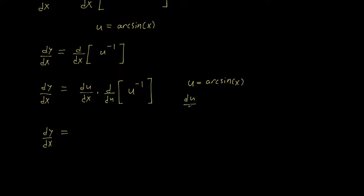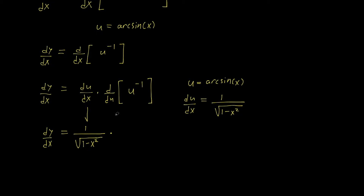So du/dx is going to equal 1 over the square root of 1 minus x squared, because the derivative of arcsin(x) with respect to x equals 1 over the square root of 1 minus x squared. So we have du/dx equal to 1 over the square root of 1 minus x squared.